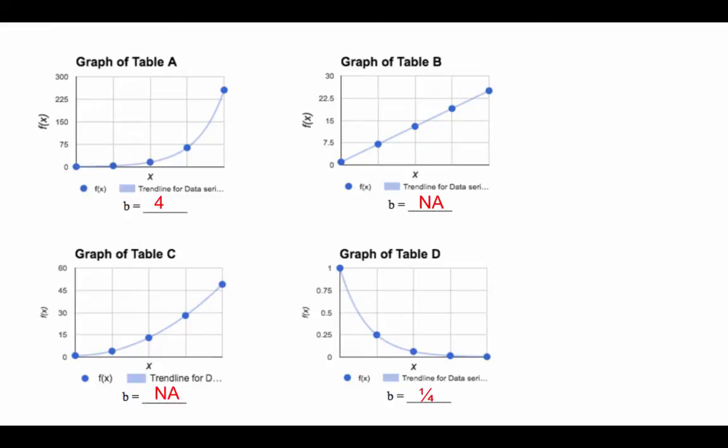I actually took the Google spreadsheet and put in the values, and I drew this using Google spreadsheet. I'll show you how to do that in class. But as you could tell, the b was 4 here, and b was 1/4. Therefore, these two are exponential.